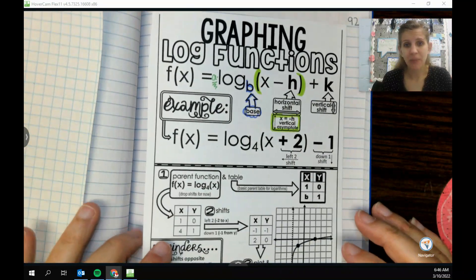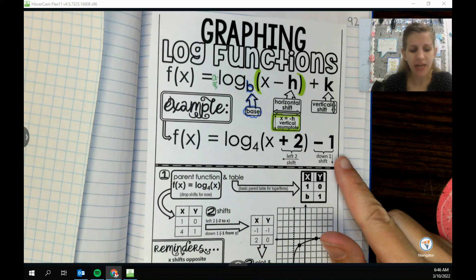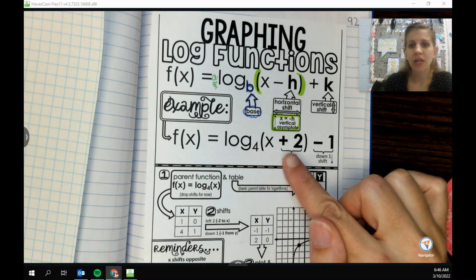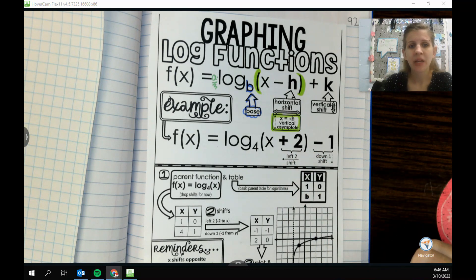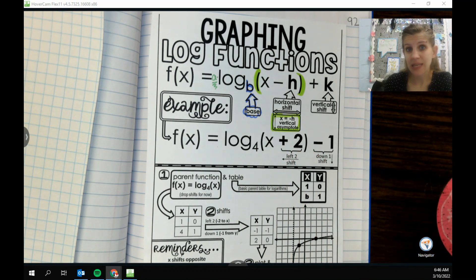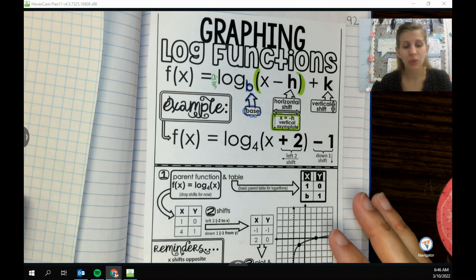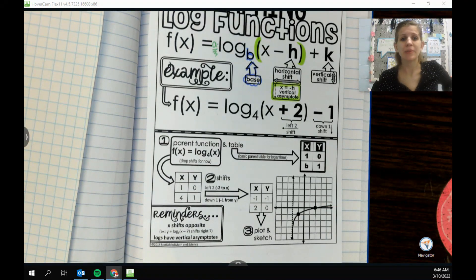So for example, if I had this logarithm right here, I can see that my base is four, we're going to go to negative two, and then down one. So the way that we're going to do that is the same way we were doing our exponential functions, where we're going to build a table and take it through a series of transformations.